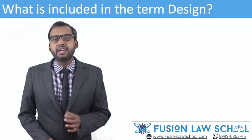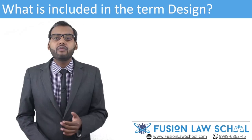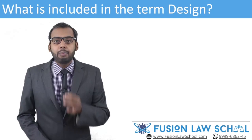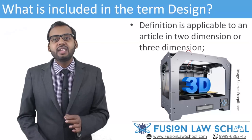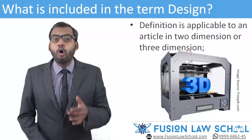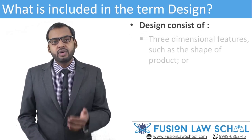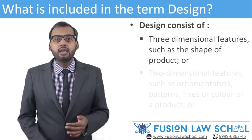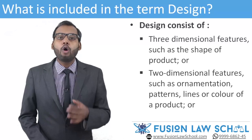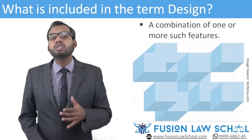The definition makes it clear that 'design' means the features of shape, configuration, pattern, ornament, or composition of lines or colors applied to an article — and not the article itself. This definition is applicable to an article in two-dimensional or three-dimensional form or in both forms. In simple words, a design consists of: first, three-dimensional features such as the shape of a product; second, two-dimensional features such as ornamentation, pattern, lines, or color; or third, a combination of one or more such features.